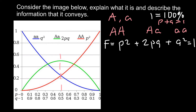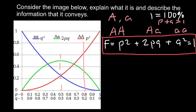For example, if dominant allele p equals 0.8 and q equals 0.2 (80% and 20%), it would still be hard to read exact values from the graph by drawing a straight line. We can solve this problem mathematically using the Hardy-Weinberg formula to get exact numbers.